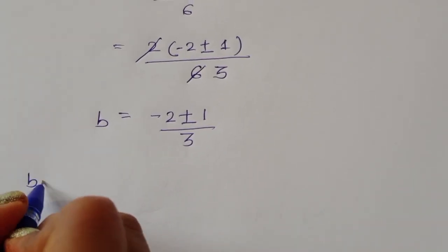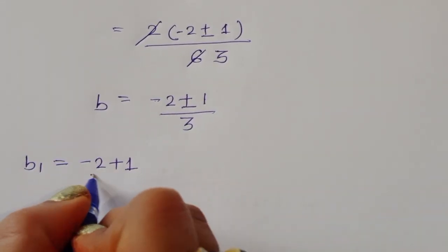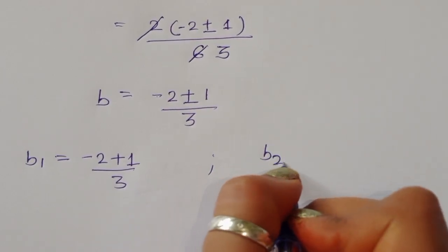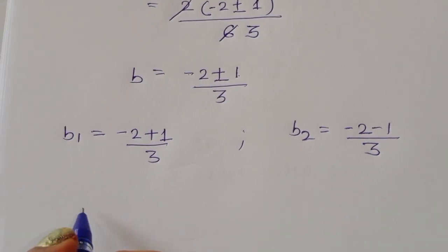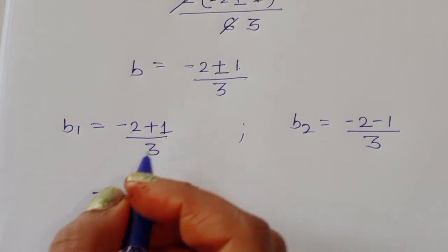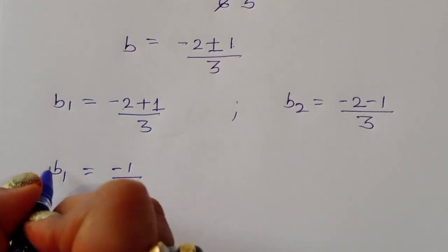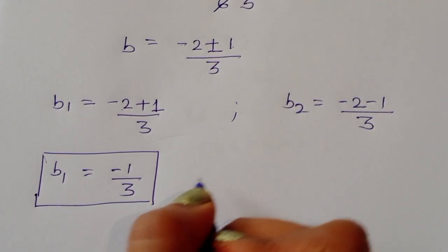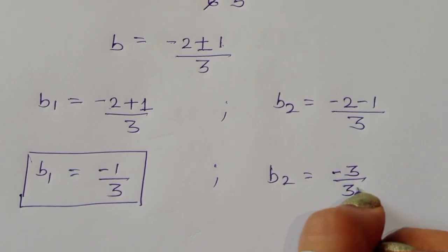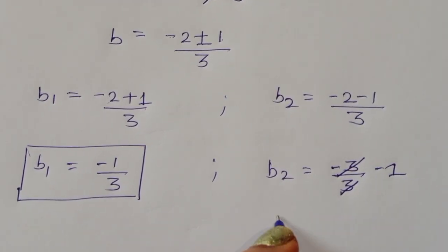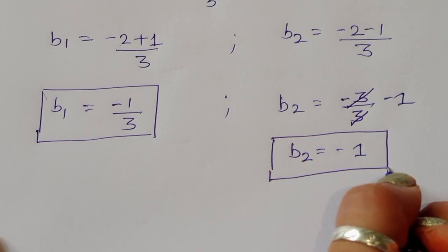So the two values are: b1 = (−2 + 1) / 3 = −1/3, and b2 = (−2 − 1) / 3 = −3/3 = −1. We have two values of b: b1 = −1/3 and b2 = −1.